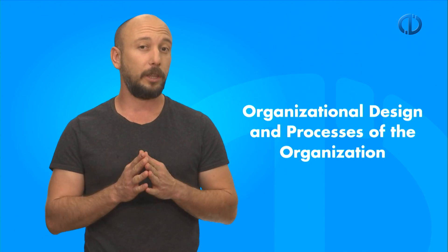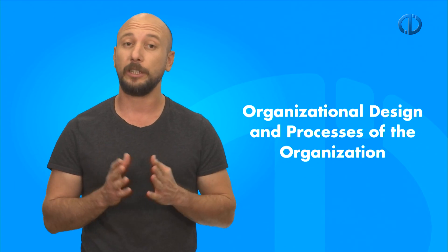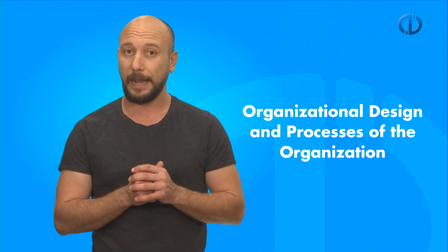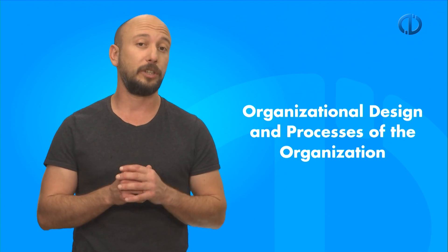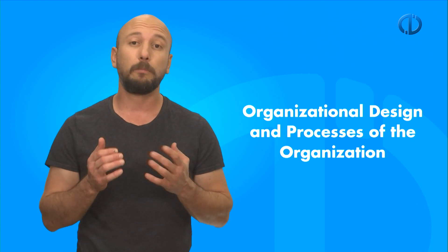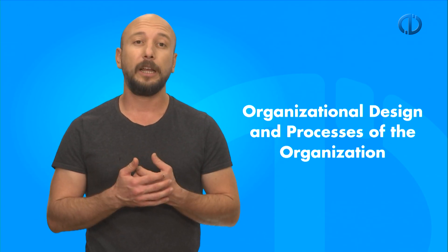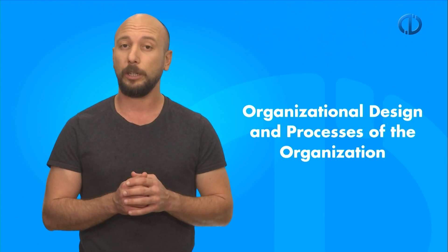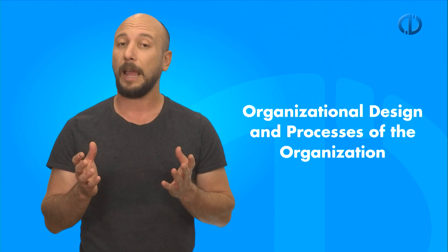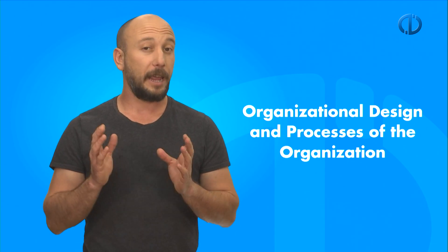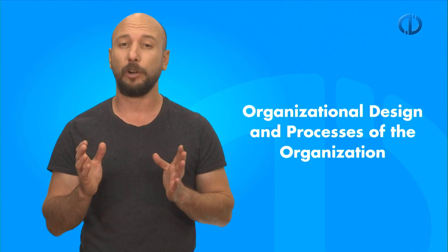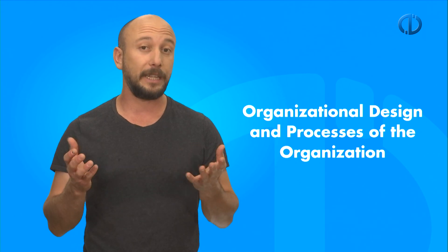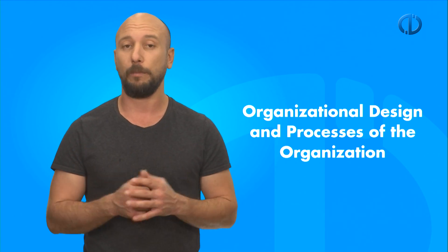Let's start with organizational design and processes of the organization. Organizational design is the whole specification of strategy, processes, and structure of the organization. Processes include coordination, control, and incentives. They aim to help achieve a configuration of mental and physical effort that leads to good organizational performance.